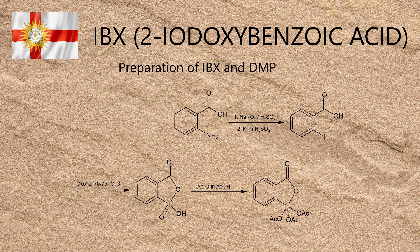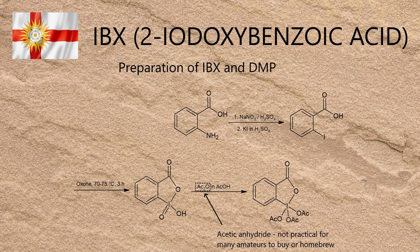For various reasons, both IBX and Dess-Martin periodinane are shockingly expensive to buy. However, the synthesis of IBX is relatively easy and amateur accessible, and that's what I'll be demonstrating in this video. Preparing Dess-Martin periodinane itself needs a whole load of acetic anhydride, which I can't buy and is a pain to make. Despite the big difference in solubility, Dess-Martin periodinane and IBX are for the most part functionally identical.